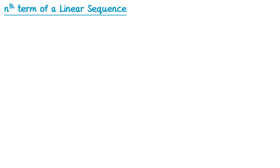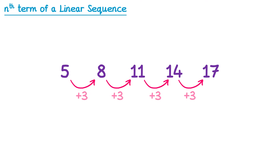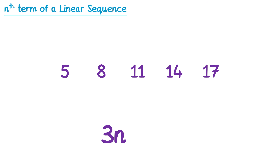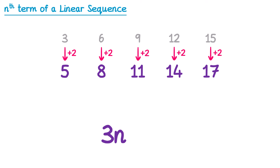Let's try another example. The first thing to do is work out the difference between the terms — this time we're adding 3, which means it must be a 3n sequence. 3n is the 3 times table, so we write that above the sequence: 3, 6, 9, 12, 15. Then we work out how to get from 3n to our sequence. To get from 3 to 5, that's plus 2. And 6 to 8 is also plus 2, and it is for all the other terms as well. So the nth term is 3n plus 2.